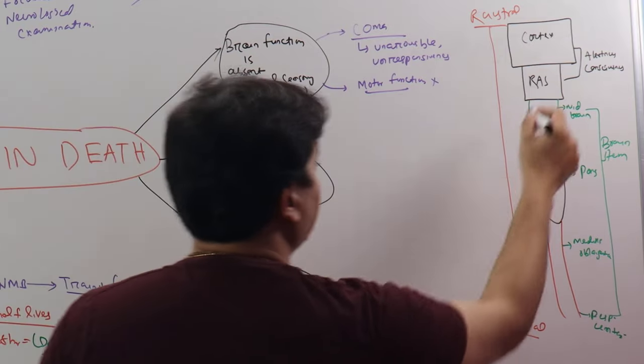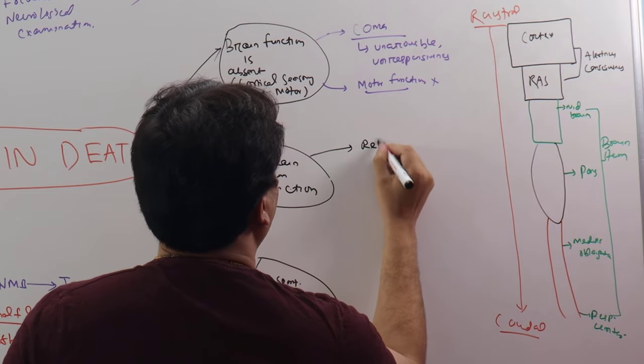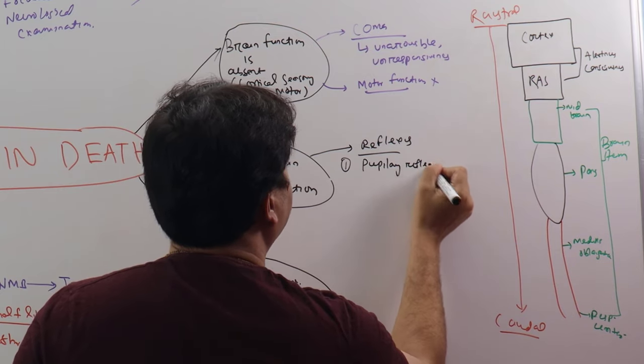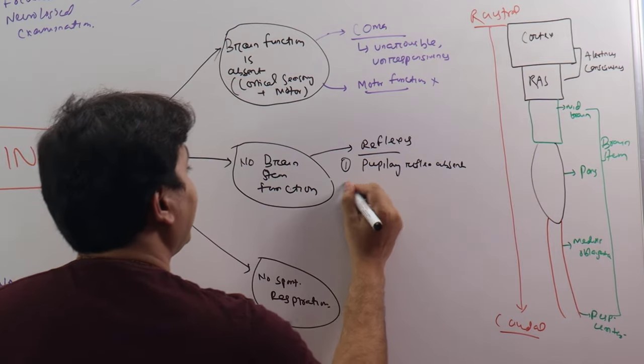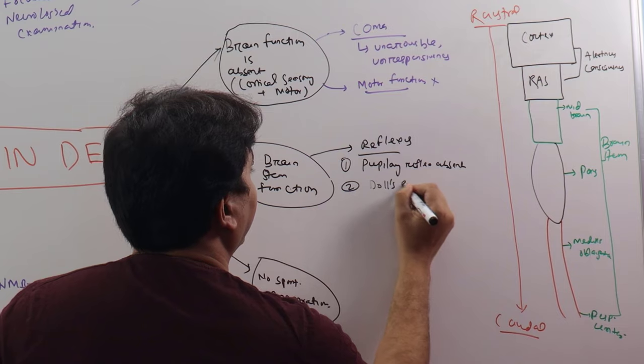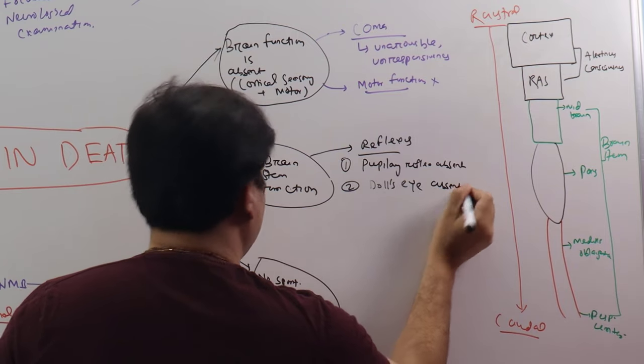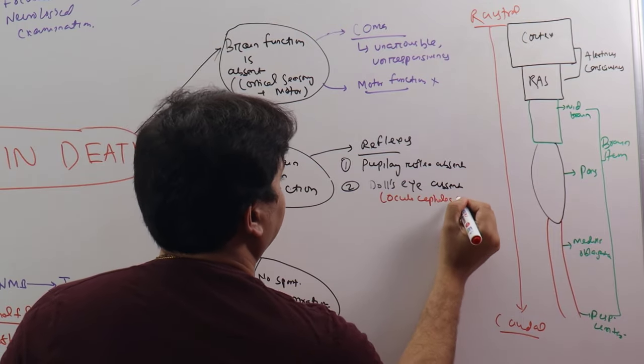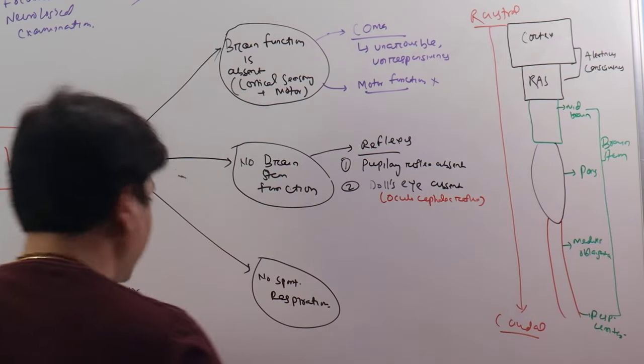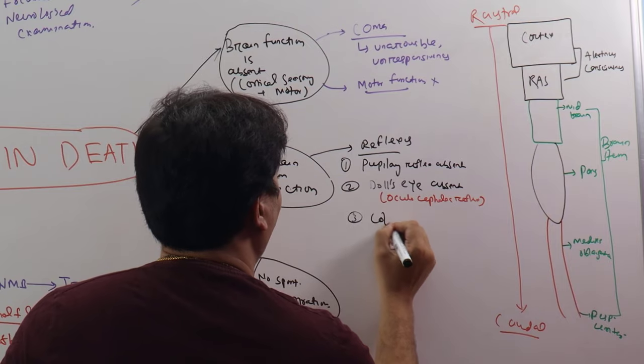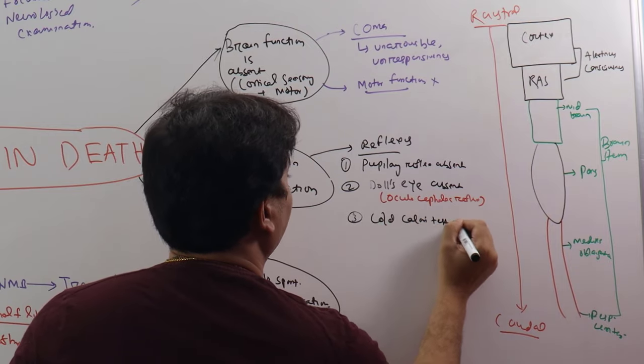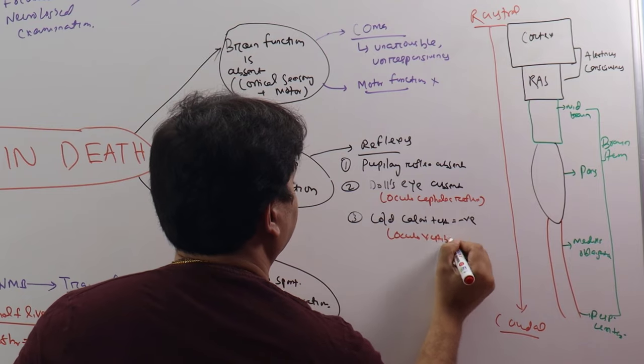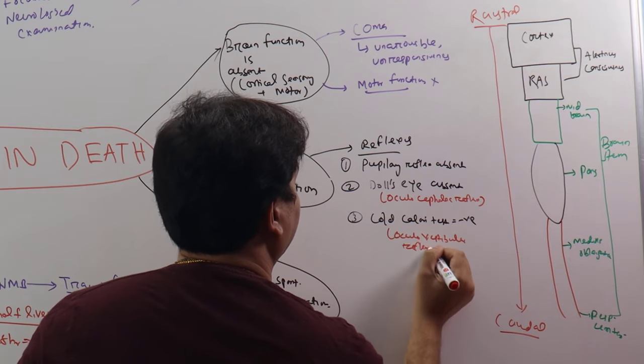Once you have proved that there is no brain function at the level of cortex and motor function, you have to go to the brainstem function examination. At the midbrain, we have to check for different reflexes. First reflex to go will be pupillary reflex. This will be absent. Second will be doll's eye, also called oculocephalic reflex. This will be absent. Number three, cold calorie test will be negative. This is also called oculovestibular reflex.